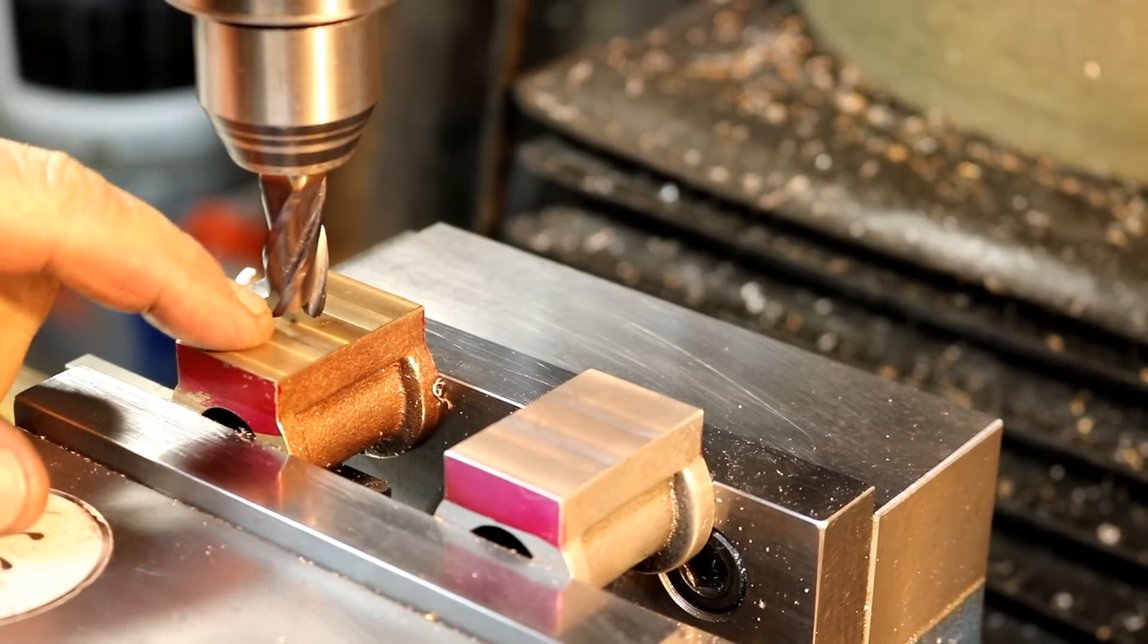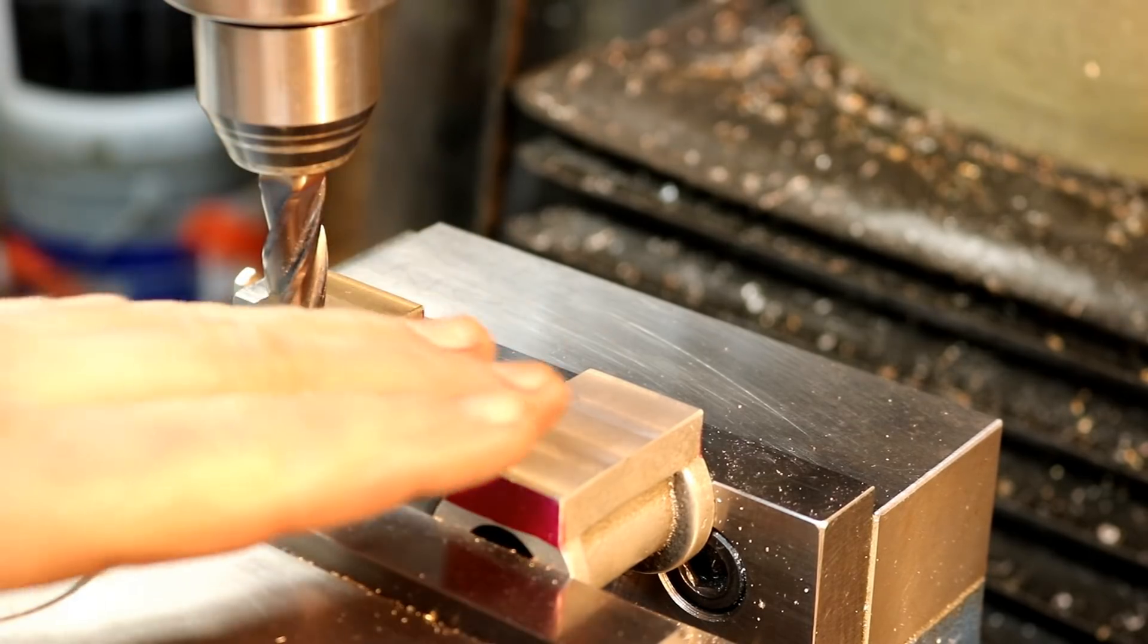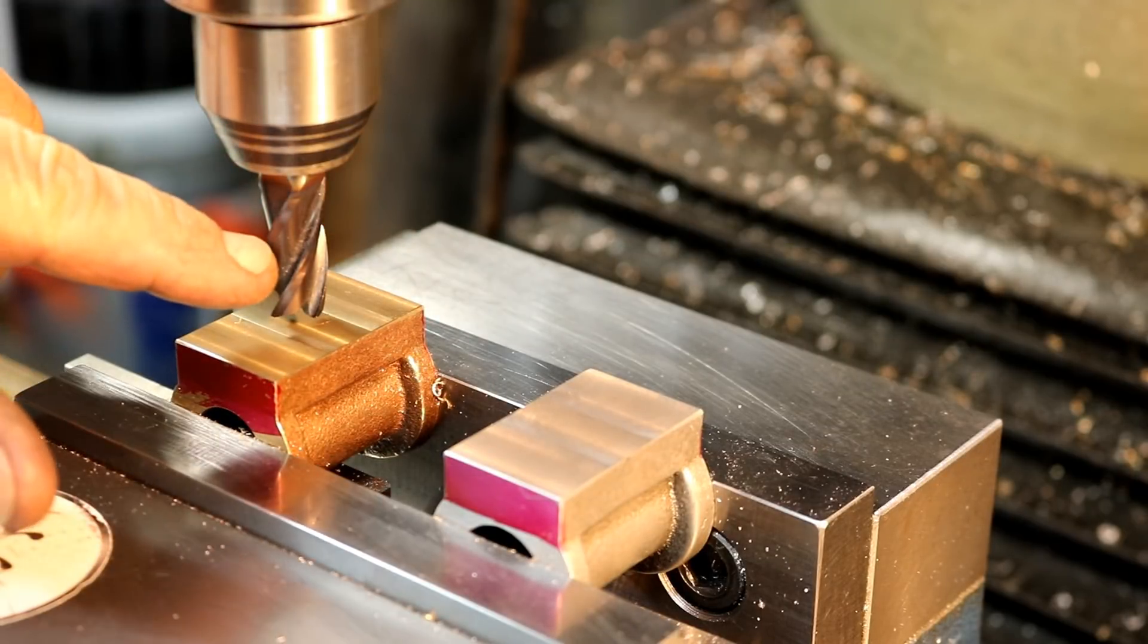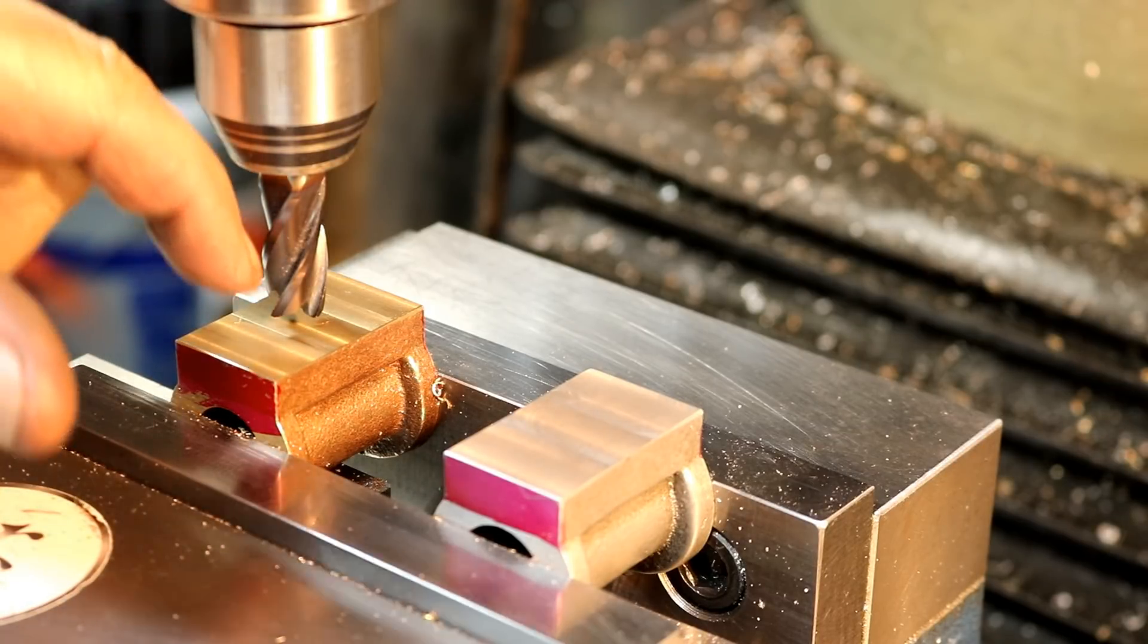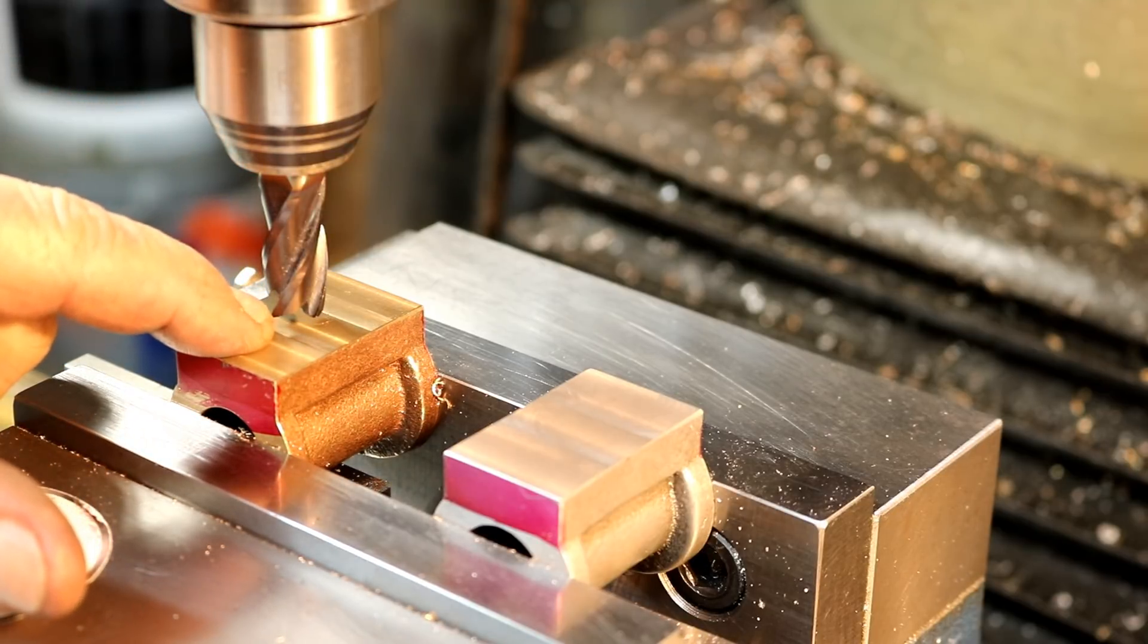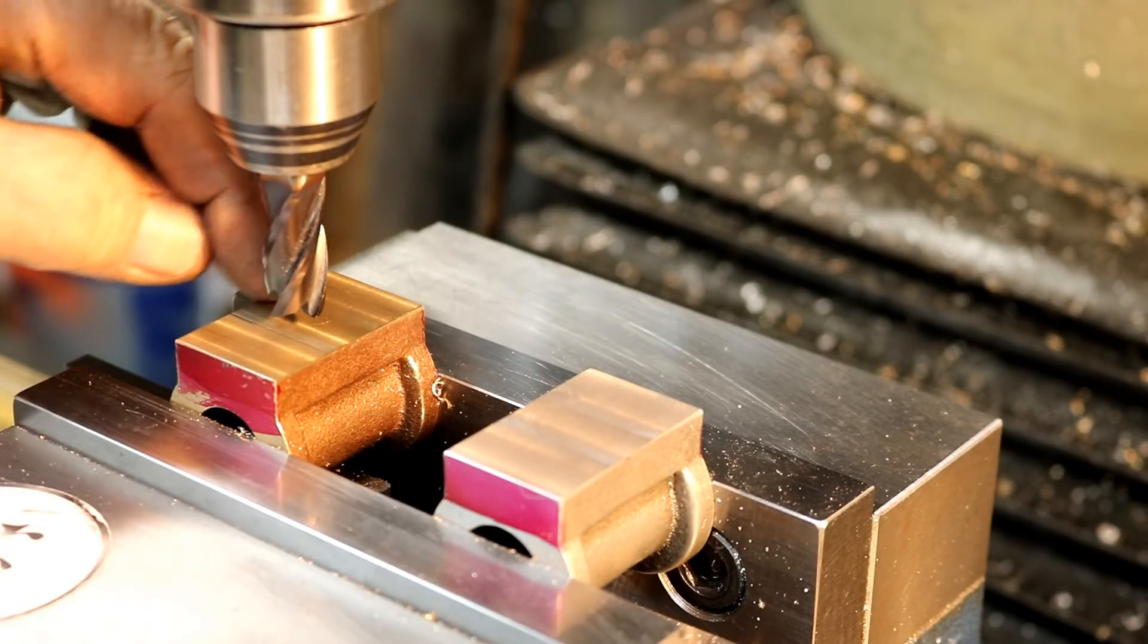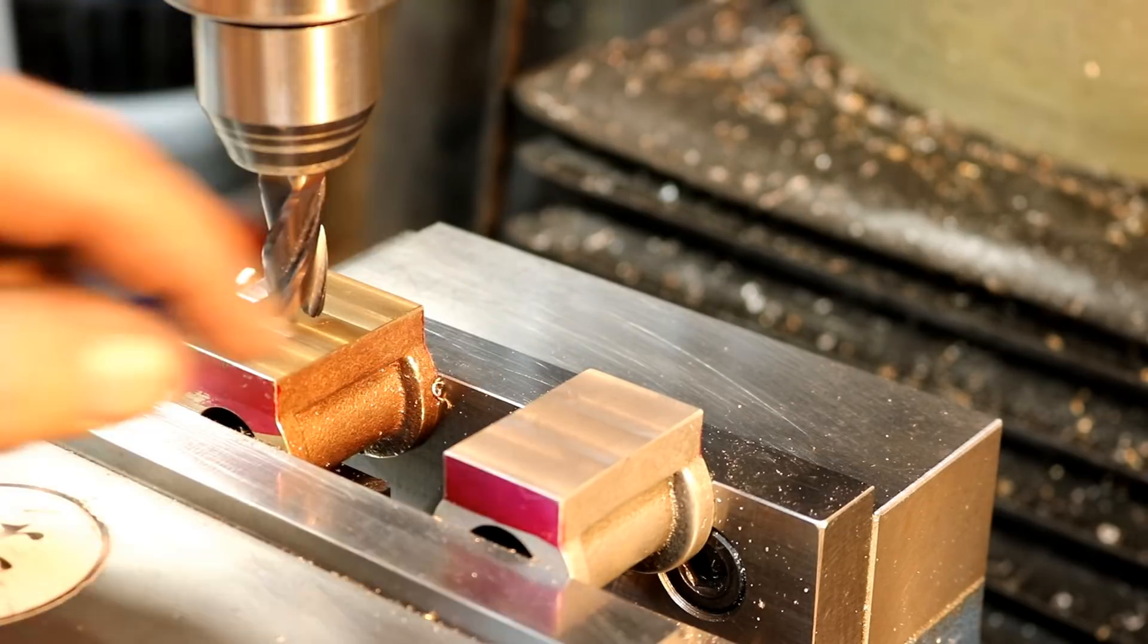I used the edge finder and found the center of each one of those and saved the centers in the memory of the DRO. So I can go from center to center without any problem. This is a half inch end mill. I'm going to go in here and just put a hole for the counterbore an eighth of an inch deep, and then go over here and do the same thing. And then I'm going to come back with a boring bar and enlarge the hole to 700 thousandths an eighth of an inch deep.